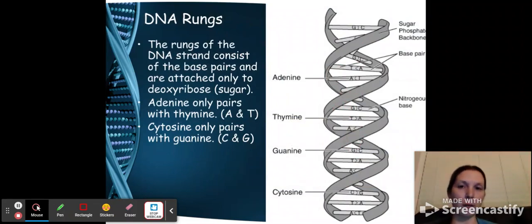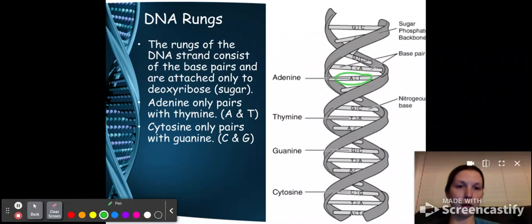The rungs, or the parts in the middle, are where your base pairs are attracted to each other. So this is where your adenine and your thymine will partner up. This is where your cytosine and your guanine will partner up, which you can see in this picture here, where they've got A's and T's together, and they've got G's and C's together.